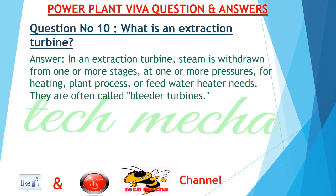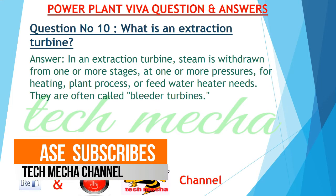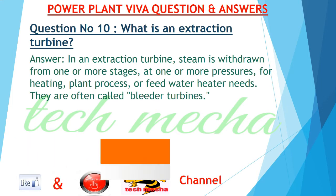Question number 10: What is an extraction turbine? In an extraction turbine, steam is withdrawn from one or more stages, at one or more pressures, for heating, plant process, or feed water heater needs. They are often called bleeder turbines.